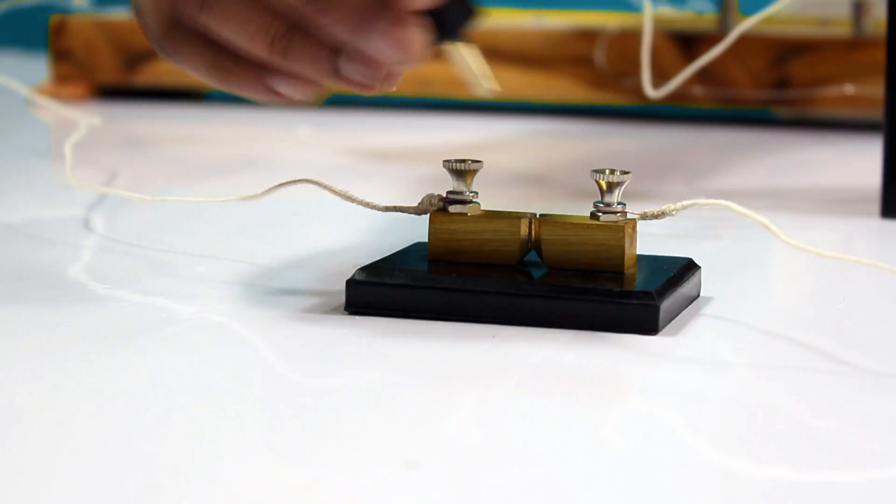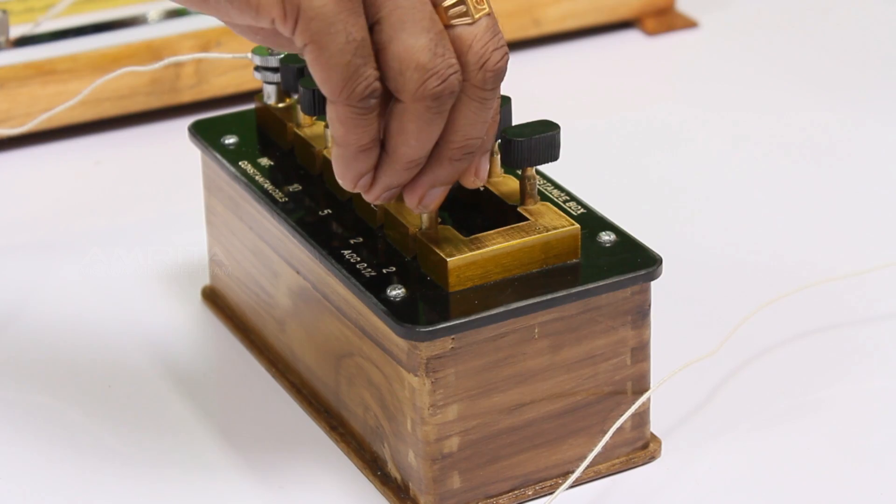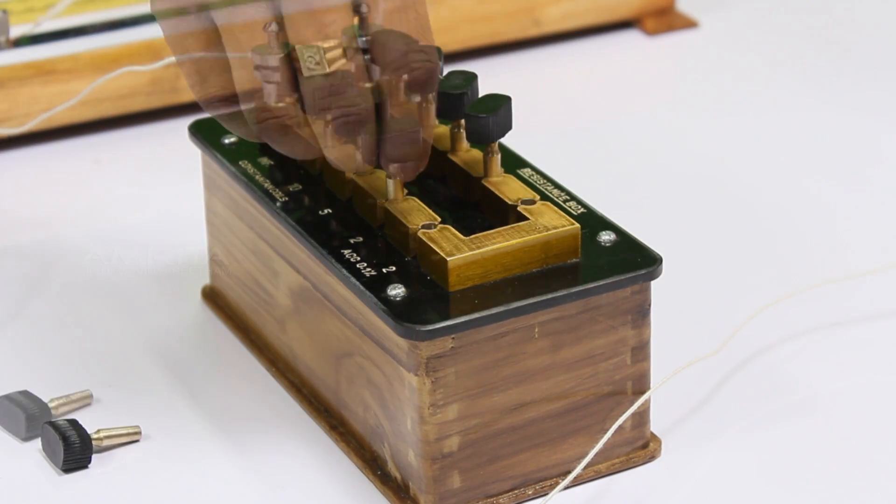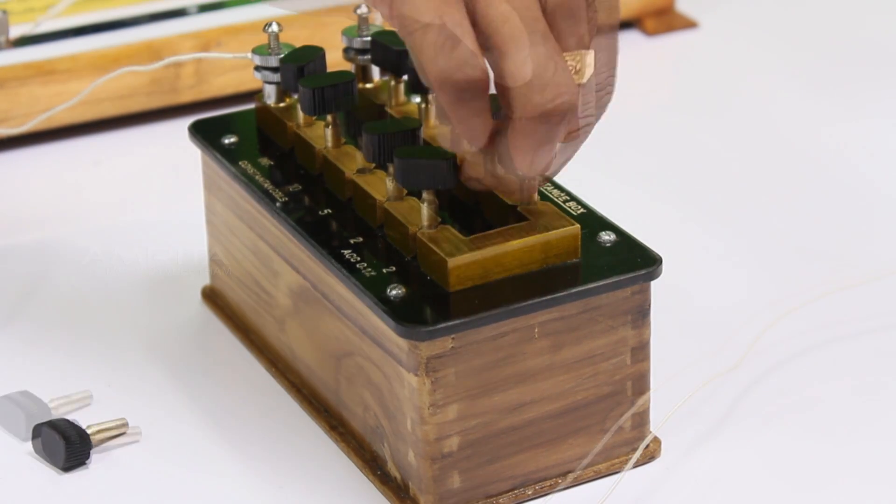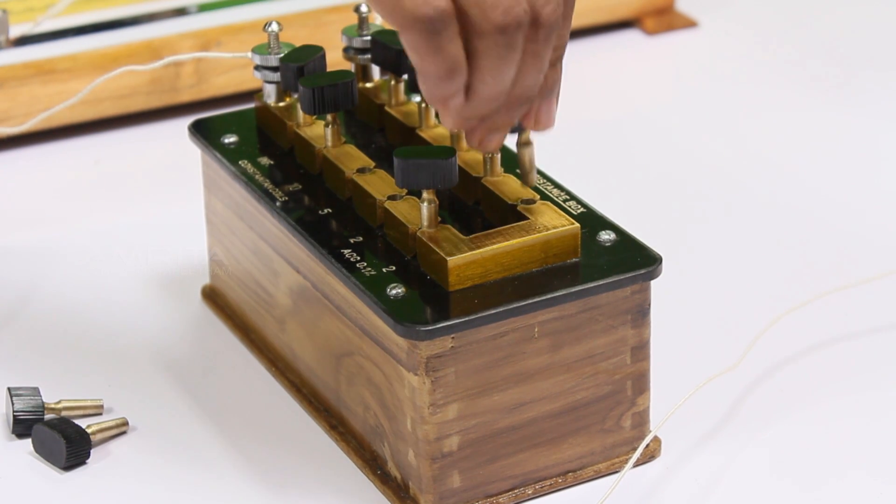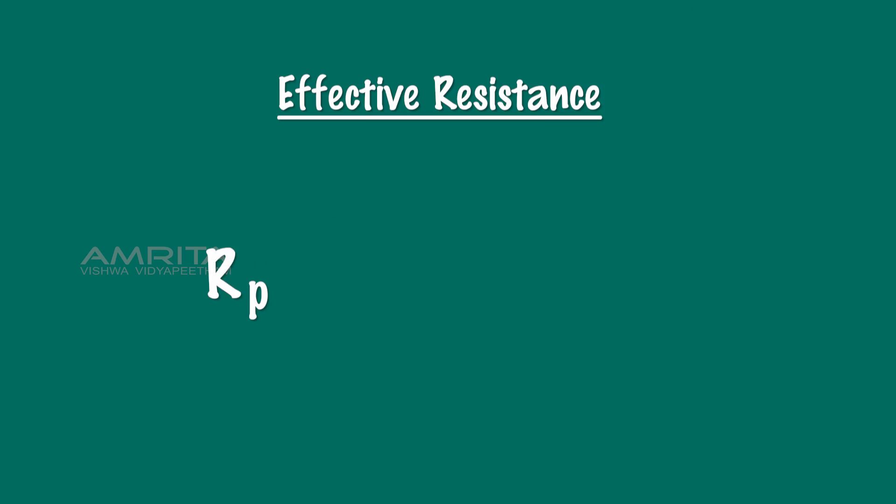Now insert the key and repeat the experiment for different values of R and calculate the mean resistance Rp using the equation Rp equals (100-L) divided by L times R.